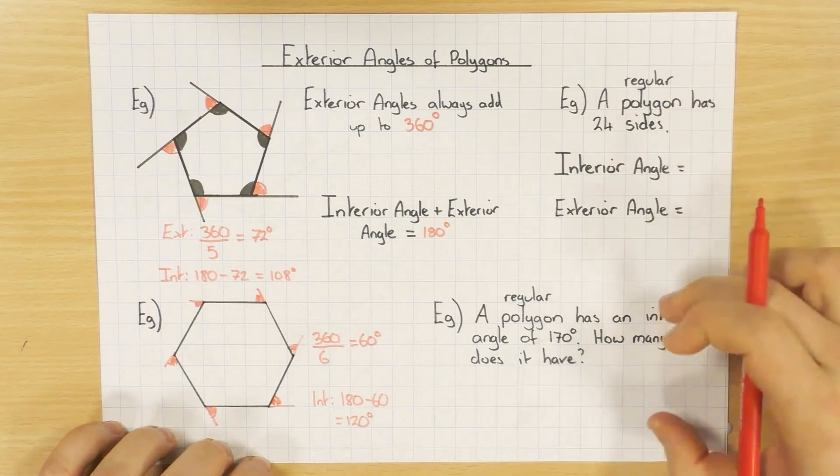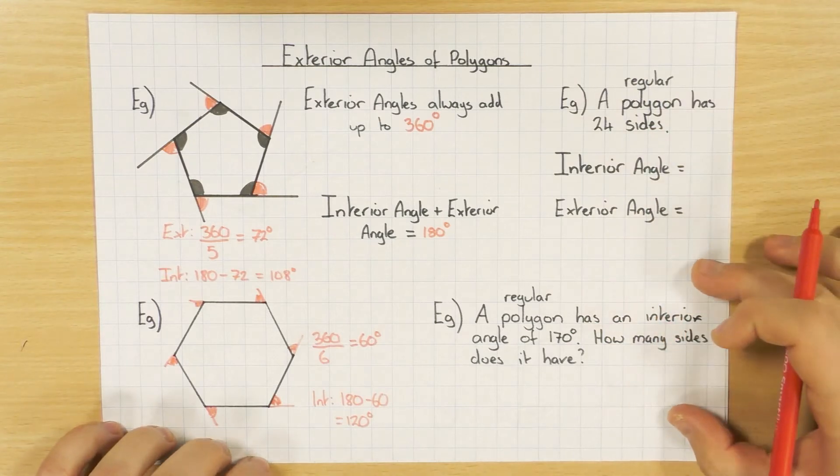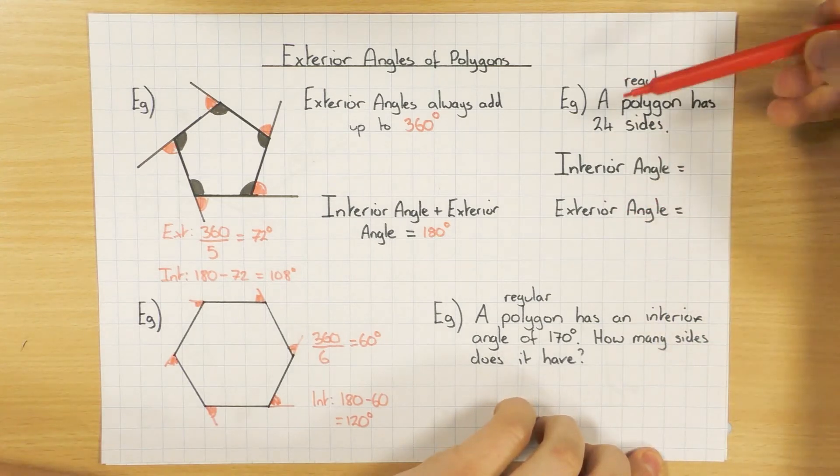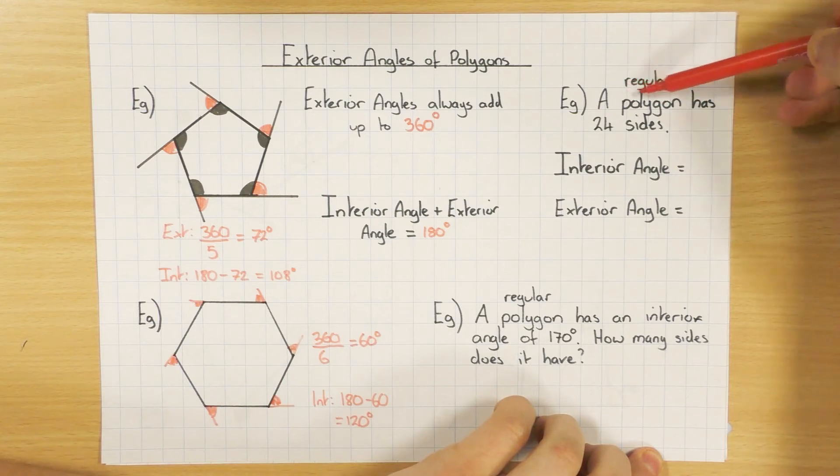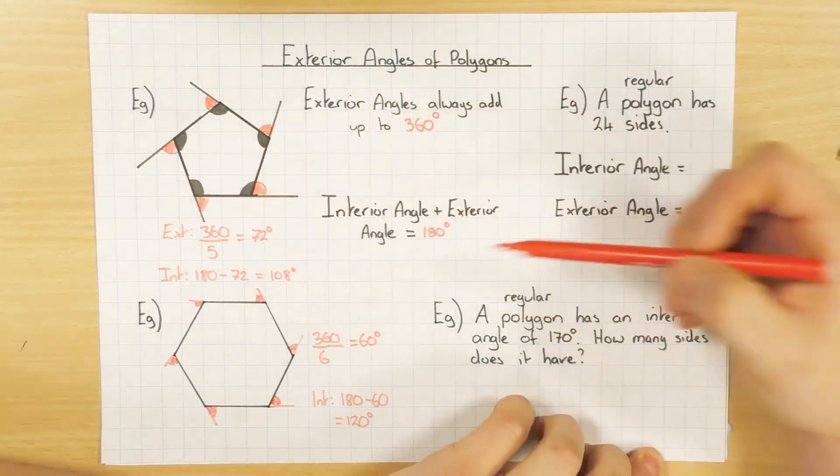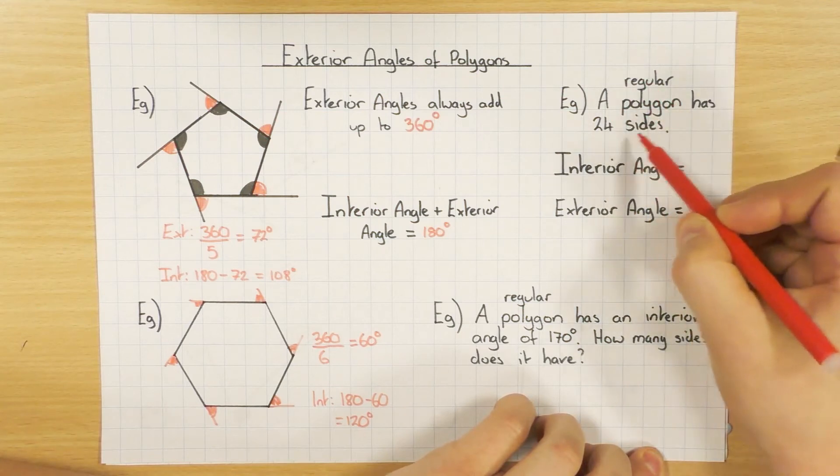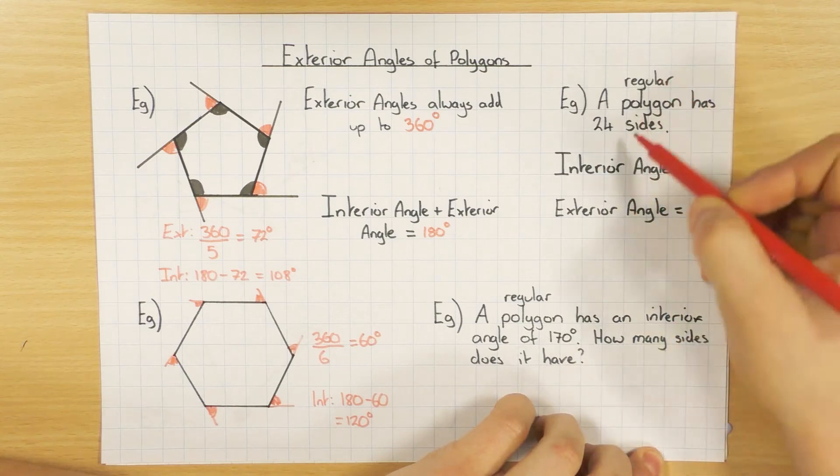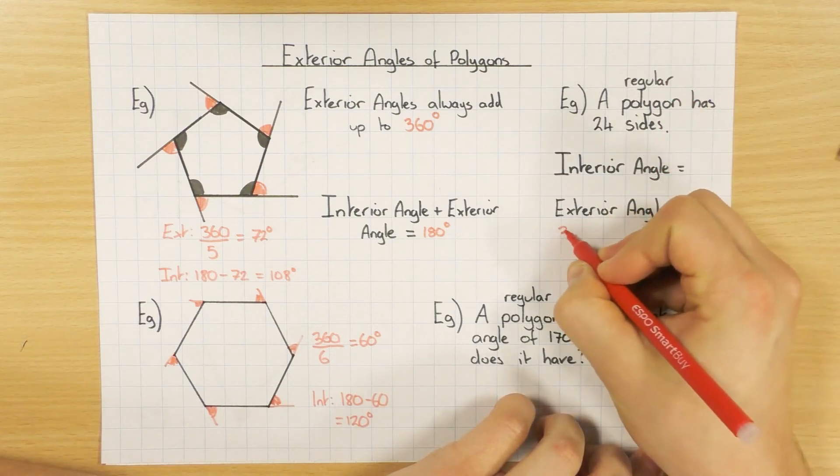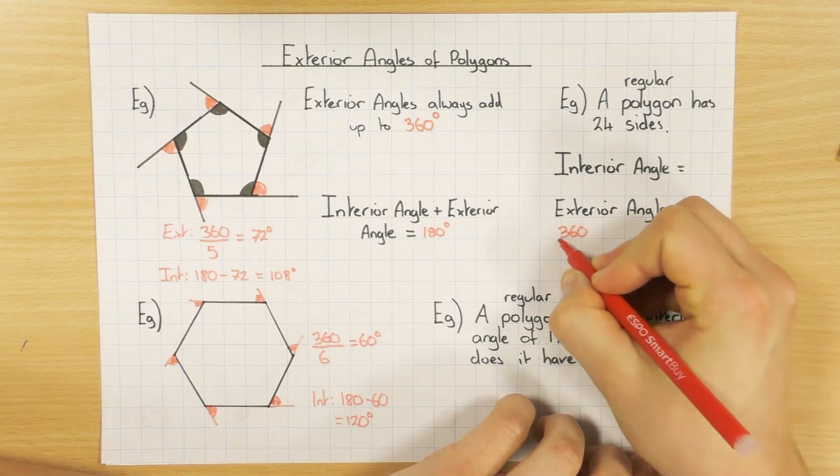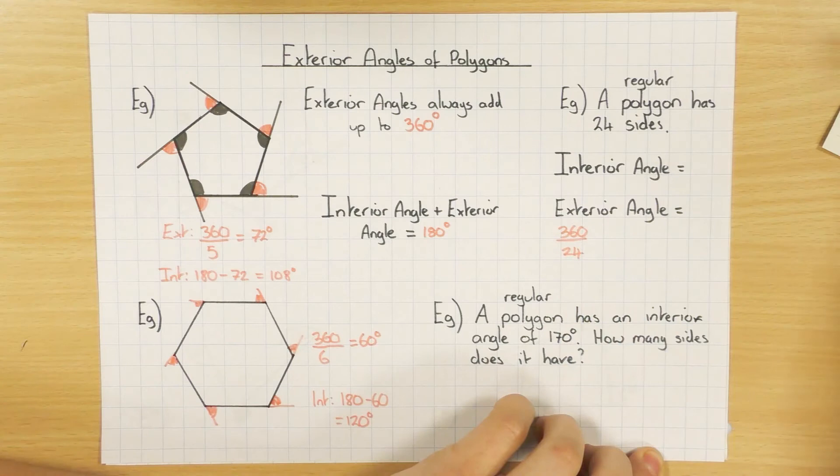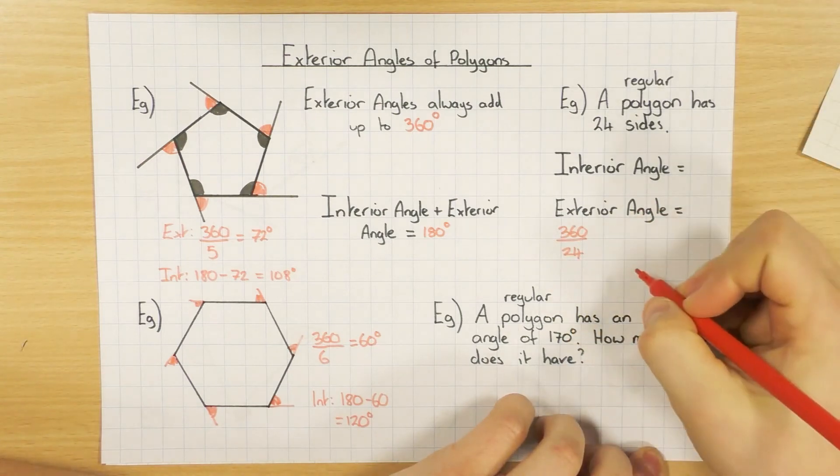These questions come up in exams, and you'll probably have one of these in one of your half-term tests or end-of-year tests, to be fair. So again, a regular polygon, that's what it'll tell you. It's key because it's regular, just as over here, it means all the angles and sides are the same. So if a regular polygon has 24 sides, I want to know what the interior angle is and what the exterior angle is.